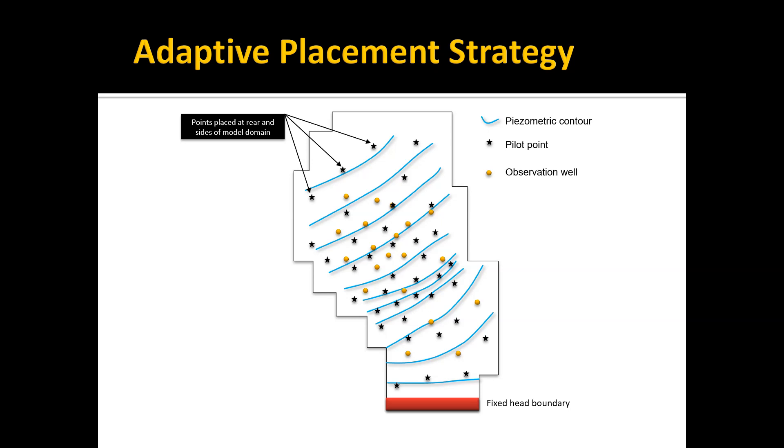If you have a well corresponding to a pump test to determine the hydraulic conductivity and you want to incorporate that into the pilot point distribution, you need to put a pilot point right on that well. Beyond that, you want to put your pilot points between observation wells. Unless you have a measured K value, you generally don't want to put your pilot points on top of your observation wells; rather, you put them between the observation wells.